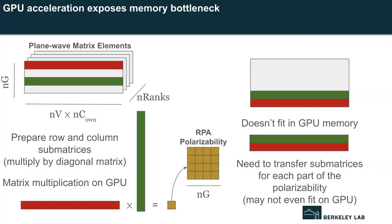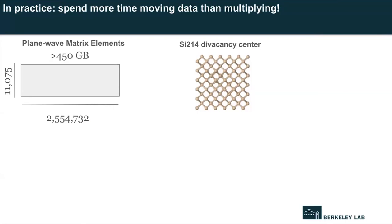The issue is that the large plane wave matrix and the two buffers needed to hold the row and column submatrices are too large to fit into GPU memory even after dividing over MPI ranks. That means we need to transfer these row and column submatrices each time we need one of the 16 multiplications, and at some point these buffers will get too large for the GPUs altogether. To give this some concreteness: a medium-small example is a silicon-214 divacancy center — 214 silicon atoms with two missing — a potential system for quantum information science. This calculation represents over 2.5 million conduction-valence pairs, each represented by about 11,000 plane waves, totaling ~450 gigabytes of data that won't fit on a GPU or a single node.